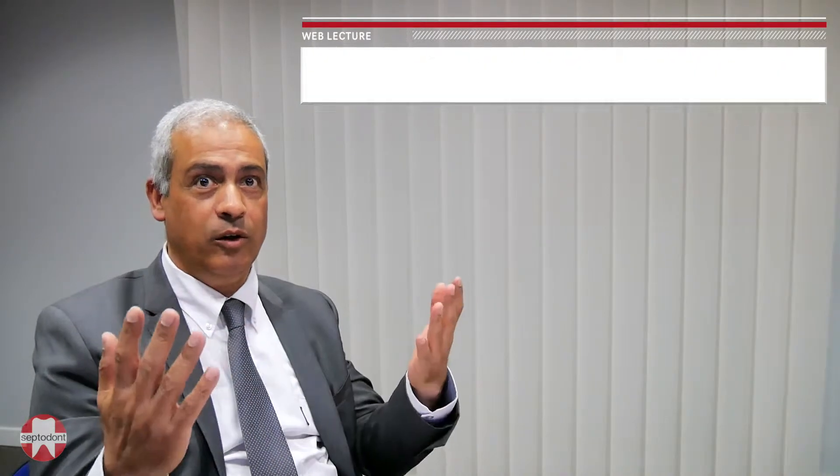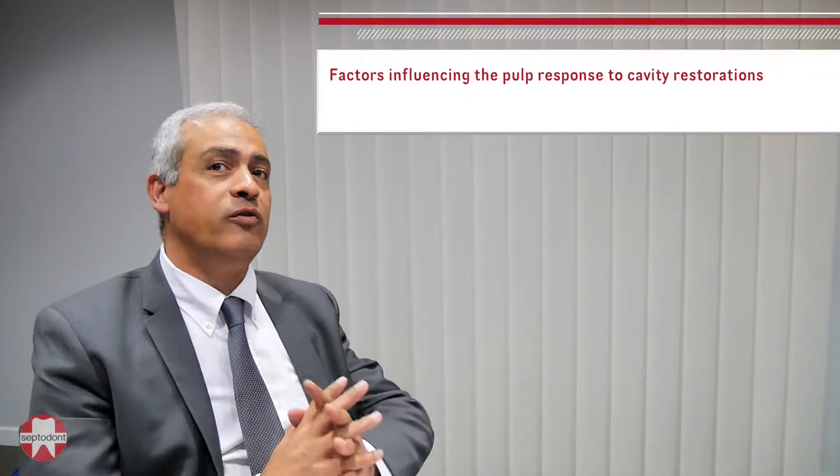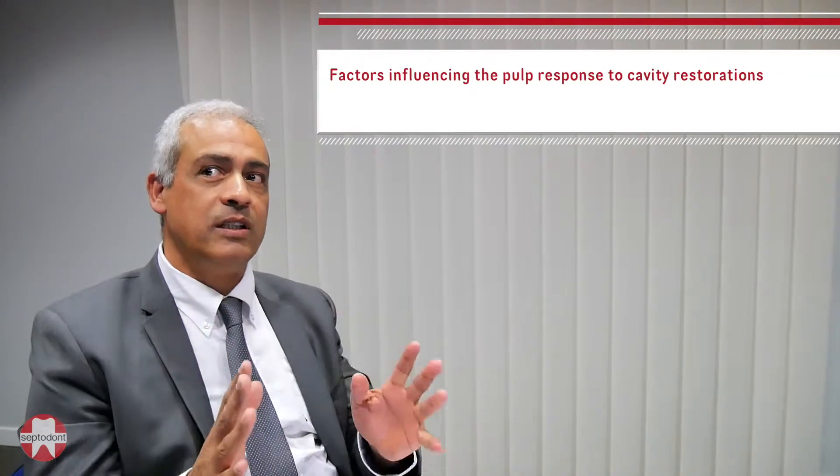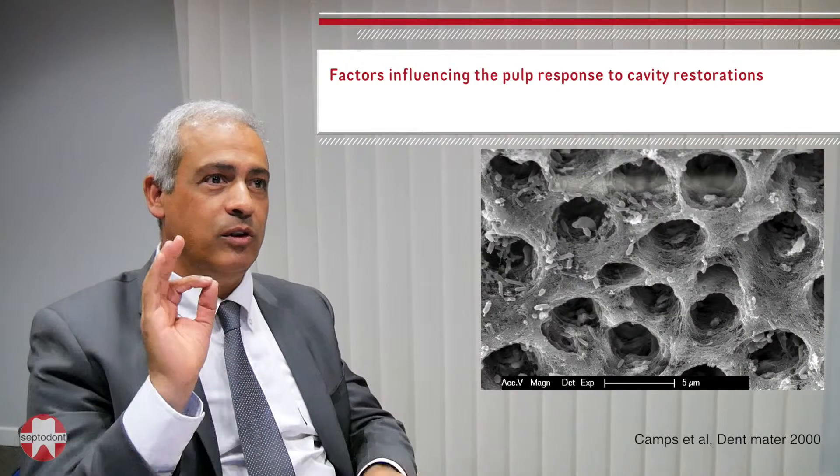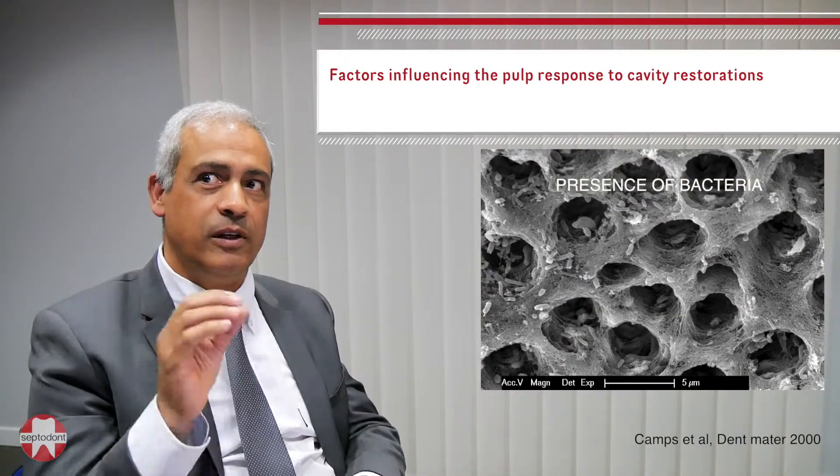Among the numerous applications of biodentine, it can be applied directly onto the pulp or indirectly, which is called indirect pulp capping. In both situations, the major factor for the success of this treatment is to eliminate bacteria. If you eliminate bacteria, you are successful.